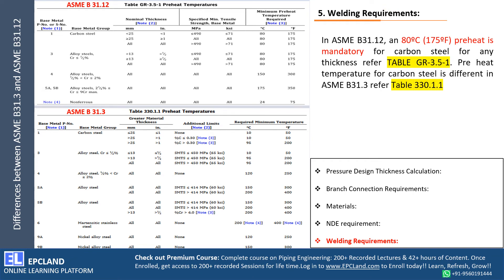Now let us understand the differences in welding requirements. In B31.12, 80 degrees Celsius of preheat is mandatory for carbon steel for any thickness. Looking at the preheat tables in both codes — in B31.3 the preheat requirement for carbon steel is 10 degrees Celsius, whereas in B31.12 it is 80 degrees Celsius. This is a stringent welding requirement in B31.12 compared to B31.3.